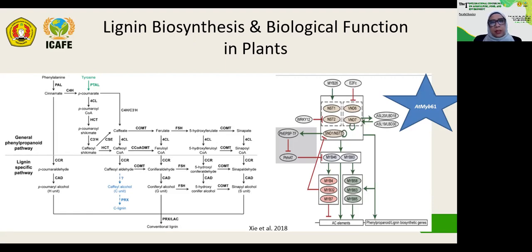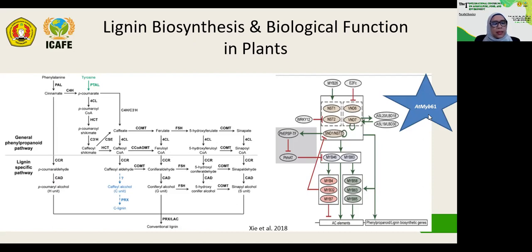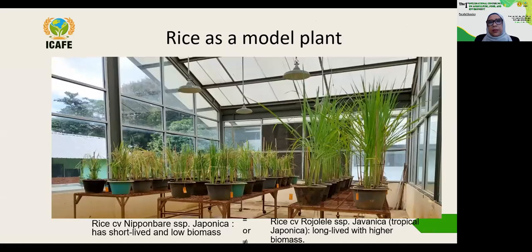Previous studies showed that transcription factors of the NAC and MYB family are involved in lignin biosynthesis; however, the mechanism is not fully understood yet. In this study, we are interested in studying one member of the MYB family — the AtMYB61 gene — isolated from Arabidopsis.